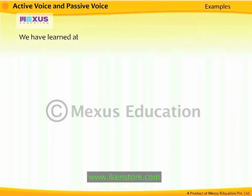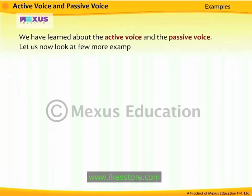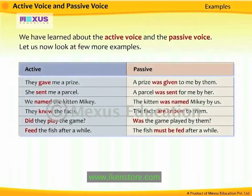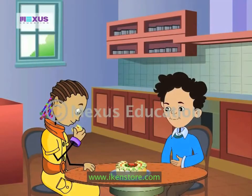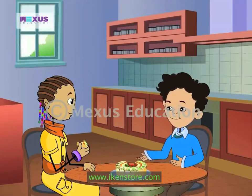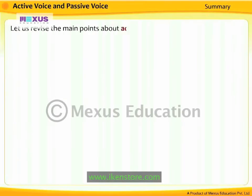We have learnt about the active voice and the passive voice. Let us now look at a few more examples. Ravi has explained the active voice and the passive voice to Zwingy. Let us revise the main points before she and Ravi eat some cake.